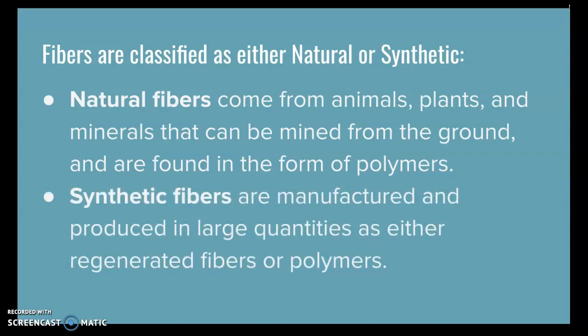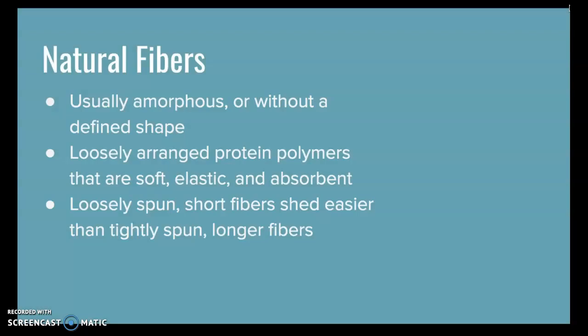Synthetic fibers are manufactured and produced in large quantities as either regenerated fibers or polymers. Natural fibers are usually amorphous, meaning they don't have a defined shape and will be more spiral or have little imperfections. They have loosely arranged protein polymers that are soft, elastic, and absorbent, and loosely spun short fibers shed much easier than tightly spun long fibers.